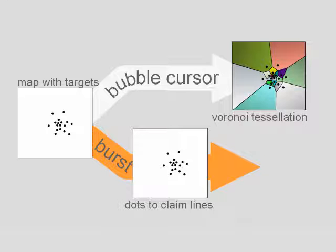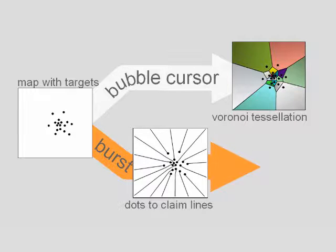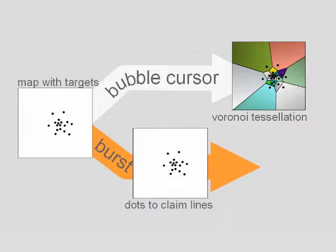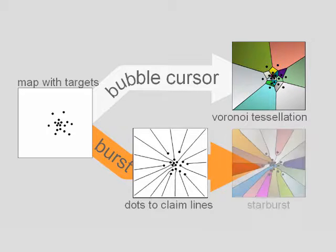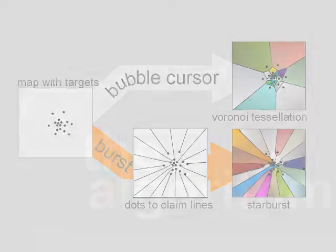Starburst, in contrast, continues to work. The reason is that Starburst first identifies areas of available screen space and then directs target growth towards these available areas. As a result, all targets are properly expanded.